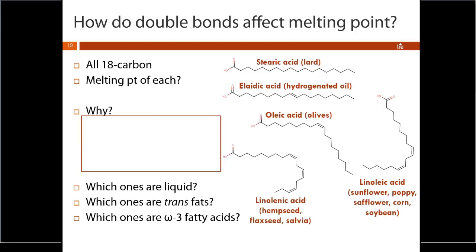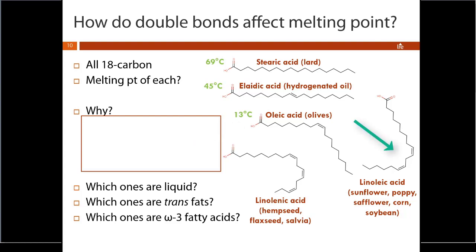Another way to affect melting point is with saturation. Here we have five different 18-carbon fatty acids. Starting with the saturated fatty acid found in lard — nothing but carbon-carbon single bonds — that gives a melting point of about 69°C. The trans fatty acid found in hydrogenated oil has a melting point of 45°C. The major fatty acid in olive oil has a cis double bond right in the middle of the chain, and that drastically lowers the melting point to 13°C.